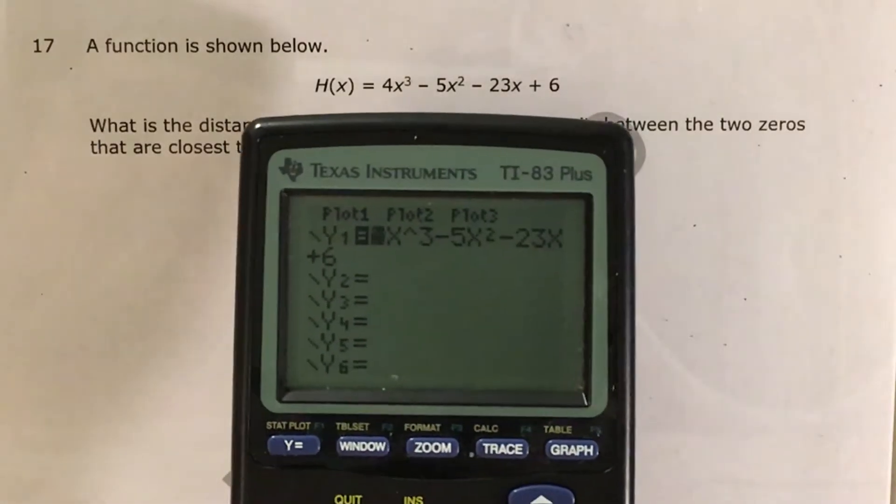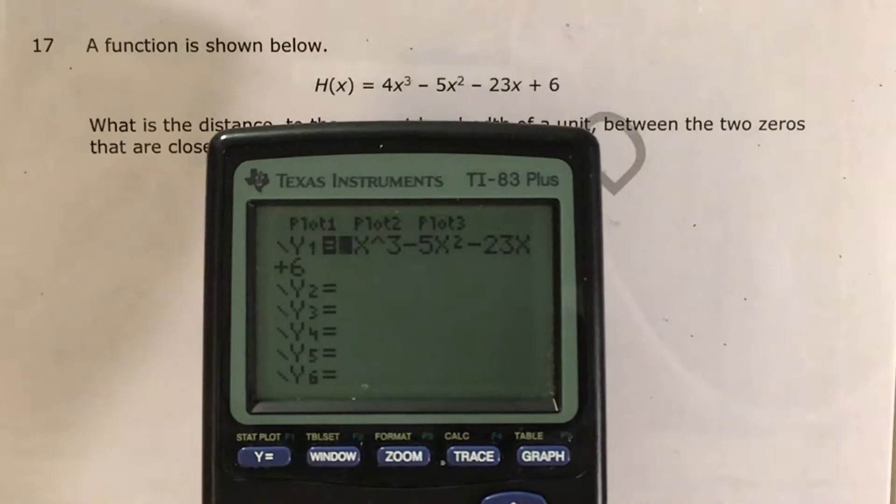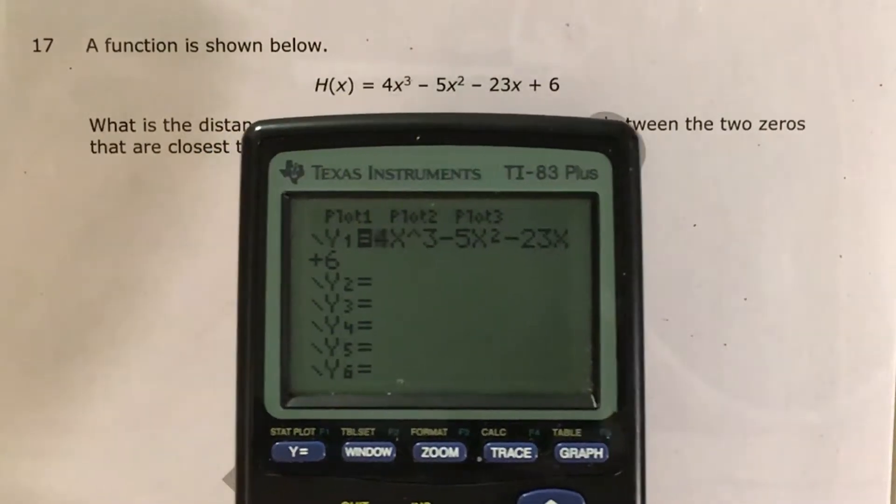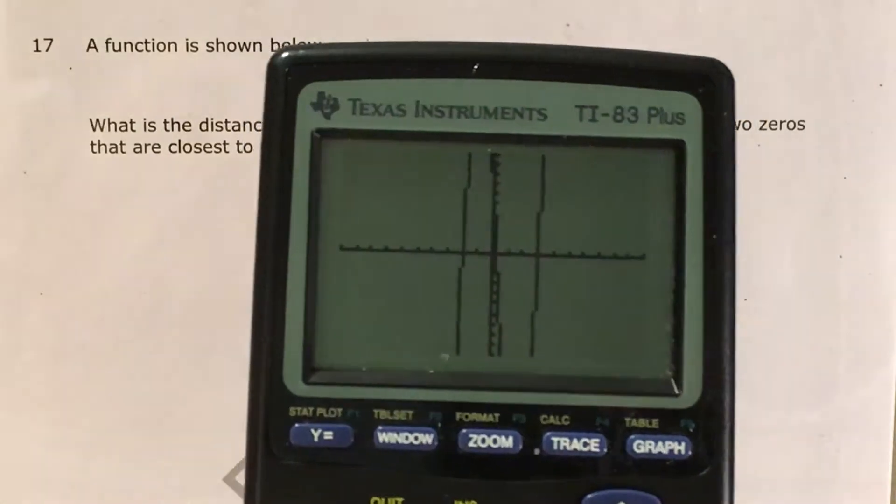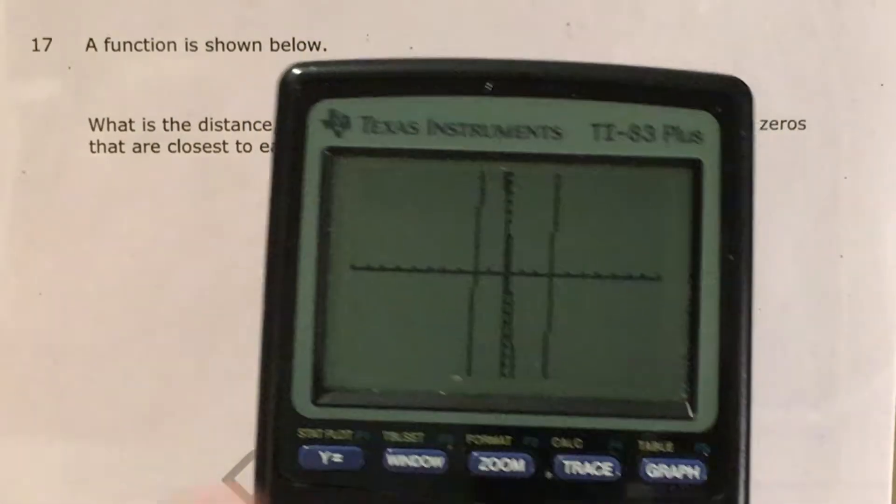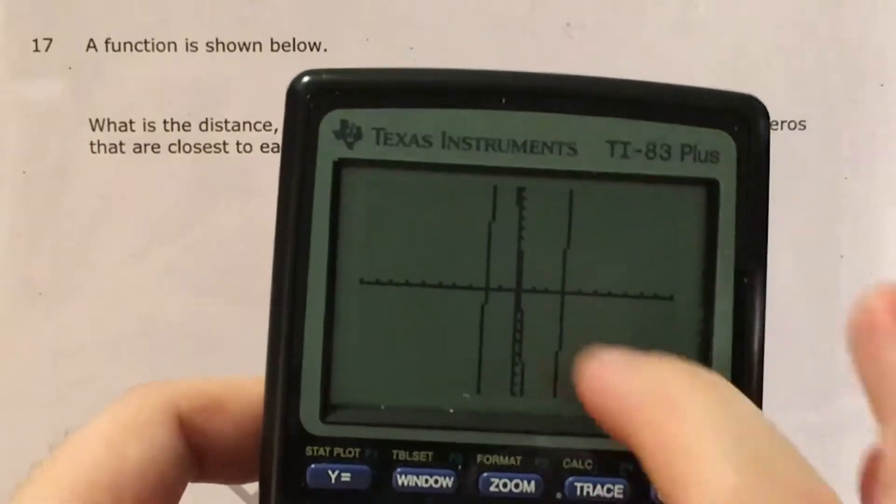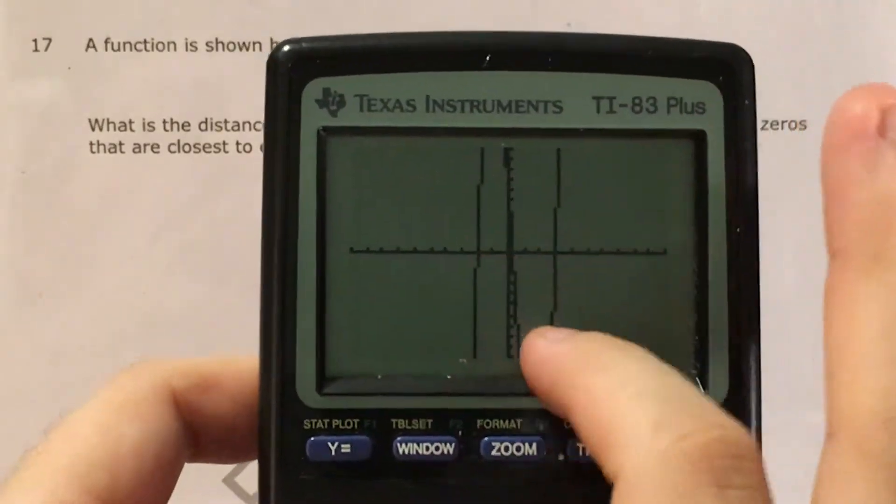I've already typed my function into y equals: 4x³ - 5x² - 23x + 6. When I graph it, it looks like this. I can see that I have one, two, three zeros and my function is kind of doing this.